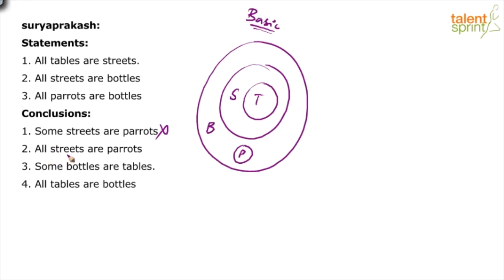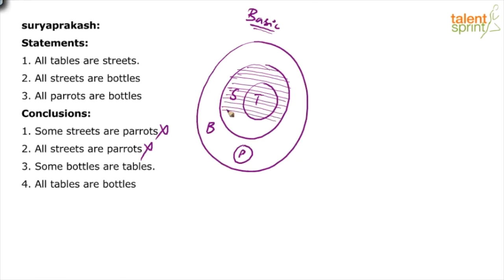Second conclusion: All streets are parrots. When there is no street-parrots overlap, how can you say all streets are parrots? Definitely wrong. Third conclusion: Some bottles are tables — definitely yes. In this basic diagram, you find there is an overlapping between bottles and tables, and even if you draw all the other possible diagrams, you'll always find that some bottles are tables.